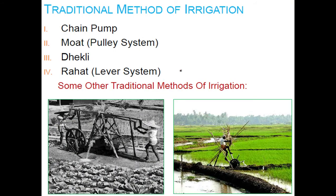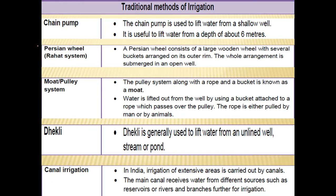Let's talk about the traditional methods of irrigation. These include the chain pump, moat (also called the pulley system), dekli, and rahat (also called the lever system). In the chain pump method, water is lifted from a shallow well and supplied to the field. In the rahat system, it consists of a large wooden wheel with several buckets arranged on the outer rim.